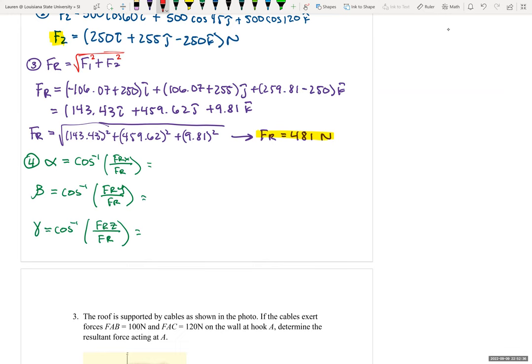Here is our FR. Here is our FRX. Here is our FRY. Here is our FRZ. And this is our FR. So if we just plug these in, we get cosine inverse times 143.43 over 481, which gives us alpha equals 72.62 degrees.